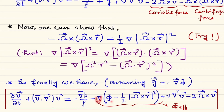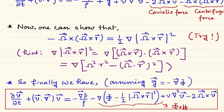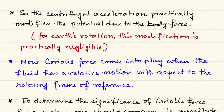If you notice carefully, the centrifugal acceleration term is inserted inside the gradient alongside the potential φ. So you can define an effective potential: φ_eff = φ − (1/2)|Ω×r|². At the end of the day, the centrifugal acceleration does nothing other than modifying the gravitational potential. If the gravitational potential is much larger than the centrifugal term, then centrifugal acceleration is already negligible — which is exactly the case for slow stellar rotation.